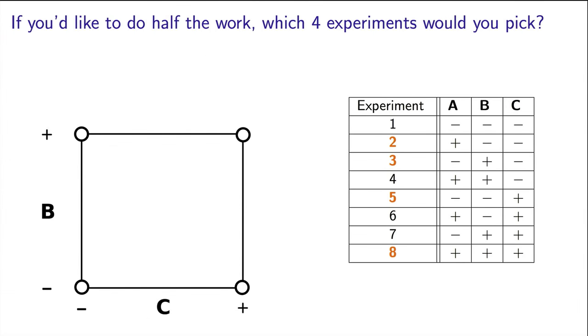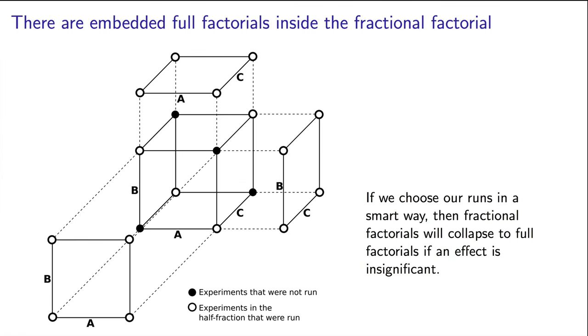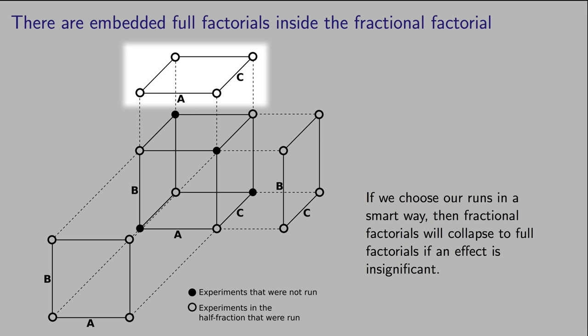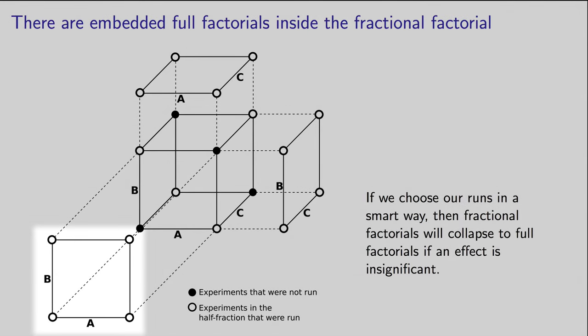As we do that, we recover 4 experiments in factor B and C. Four experiments in two factors, that's a full factorial. We don't have to do any more work here. These 4 experiments that we've already run now complete a full factorial in factors B and C. In fact, you can prove this to yourself for the case when factor B is not significant. Then it collapses to a full factorial in factor A and factor C. If factor C is not significant, then it collapses to a full factorial in factor A and factor B. So from that perspective, these are really a good set of 4 experiments to use.